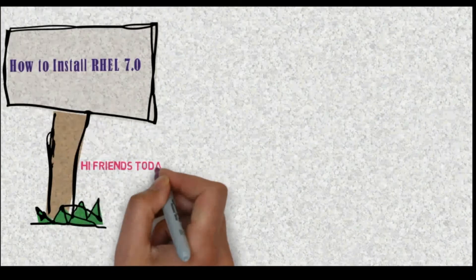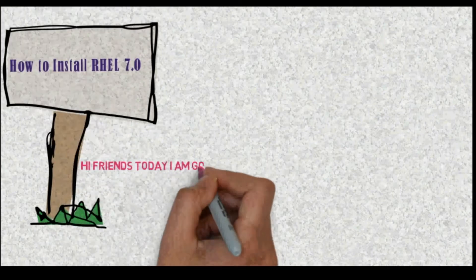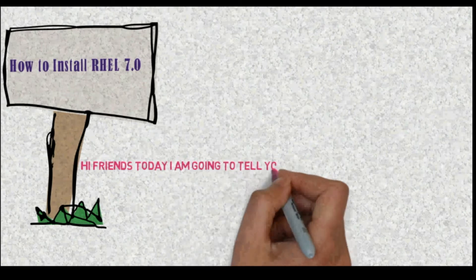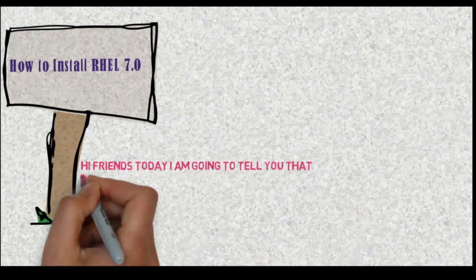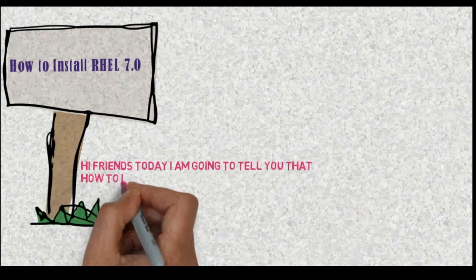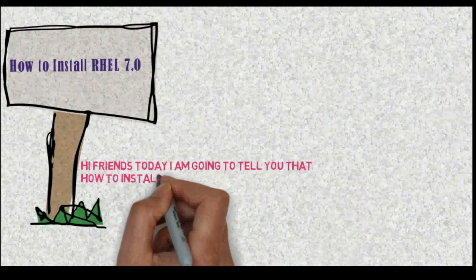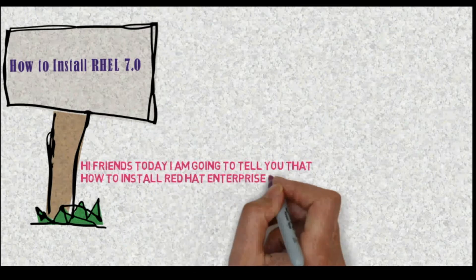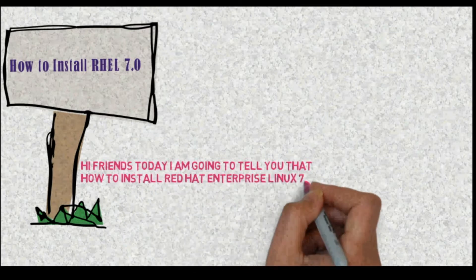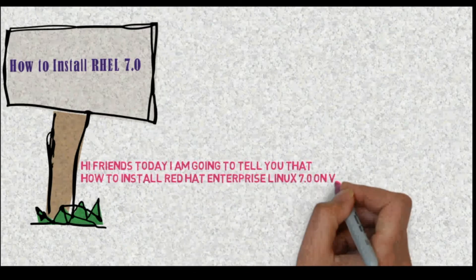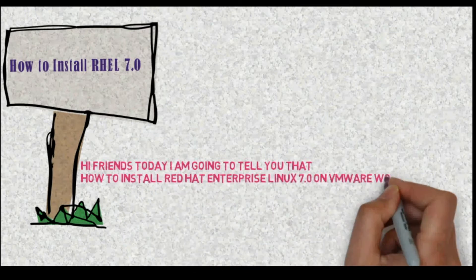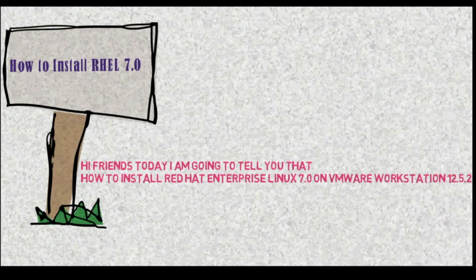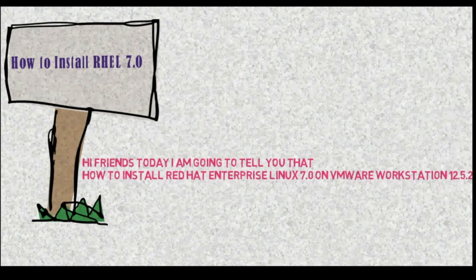Hi friends, my name is Vikas. Today I am going to show you how to install Red Hat Enterprise Linux 7.0 on VMware Workstation version 12.5.8.